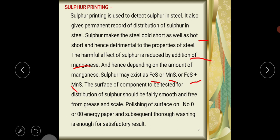The surface of the component to be tested for distribution of sulfur should be fairly smooth and free from grease and scale. Polishing of surface on number zero or double zero emery paper and subsequent thorough washing is enough for satisfactory results.